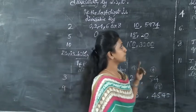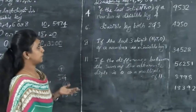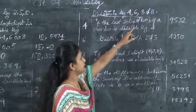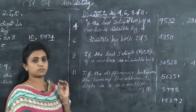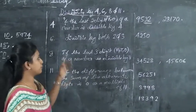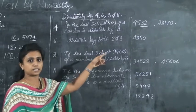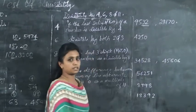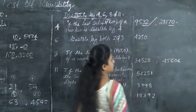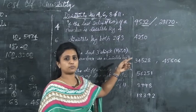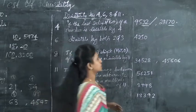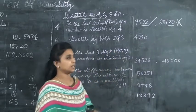Now let's learn about divisibility by 4, 6, 8, and 11. For 4: a number is divisible by 4 if the last two digits — the tens and ones — are divisible by 4. For example, 9532: look at the last two digits, 32. Since 32 is divisible by 4, we can say 9532 is divisible by 4. For 28,170: the last two digits are 70, and 70 is not divisible by 4, so 28,170 is not divisible by 4.